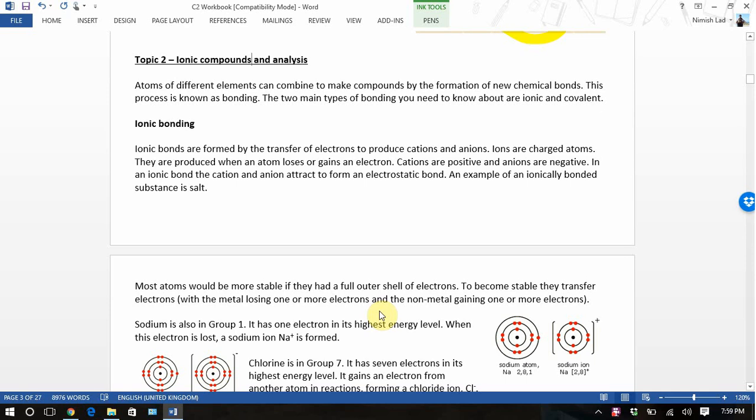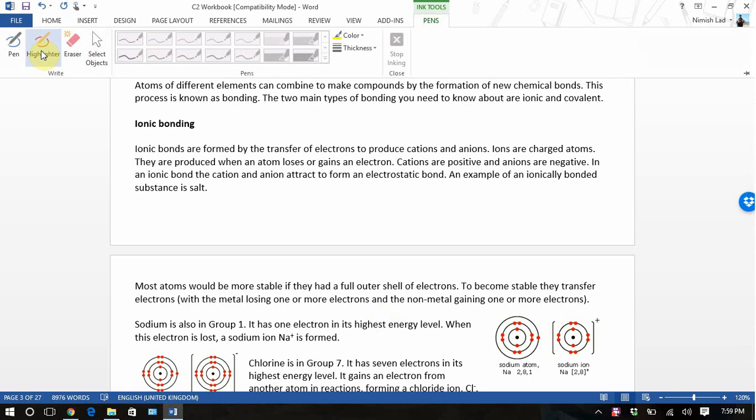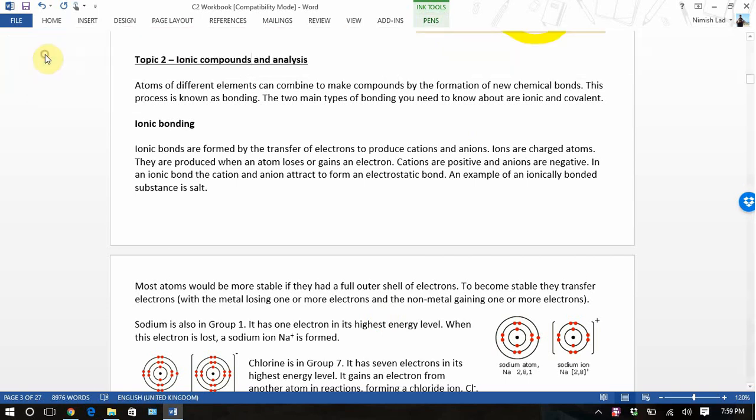This is a video on Edexcel topic 2 chemistry, C2, on ionic compounds and analysis. If we get cracking straight away, we've got two types of bonding that we need to talk about. Topic 2 is about ionic bonding. Topic 3 is about covalent. So let's get straight away stuck into ionic bonding.